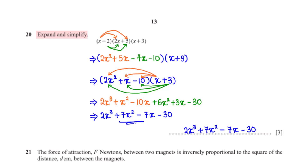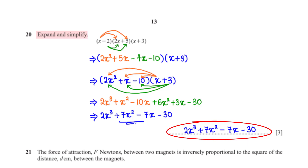Expand and simplify (x − 2)(2x + 5)(x + 3). Expanding the first two brackets gives 2x² + 5x − 4x − 10. Expanding with the third bracket and grouping like terms gives 2x³ + 7x² − 7x − 30.